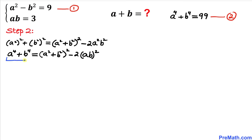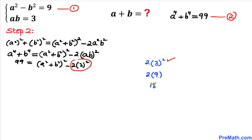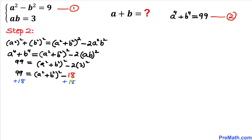We know a⁴ plus b⁴ equals 99 from equation 2, and a times b equals 3. Replacing these values: 99 equals (a² plus b²) squared minus 2 times 3 squared. The term 2 times 9 simplifies to 18. Adding 18 to both sides, we get (a² plus b²) squared equals 117.